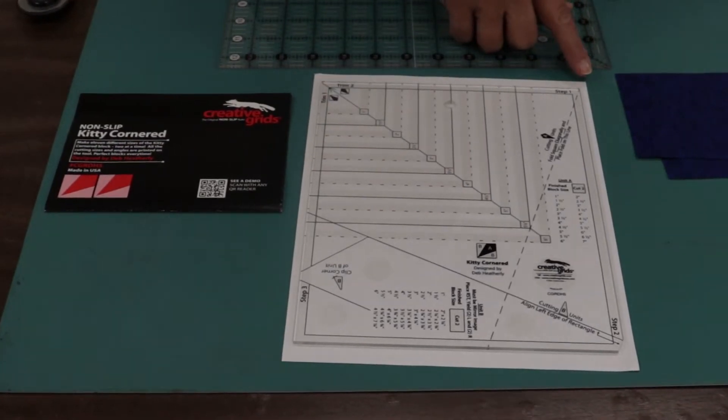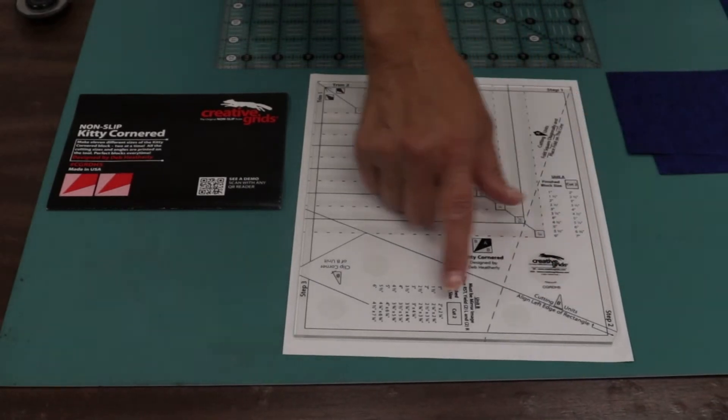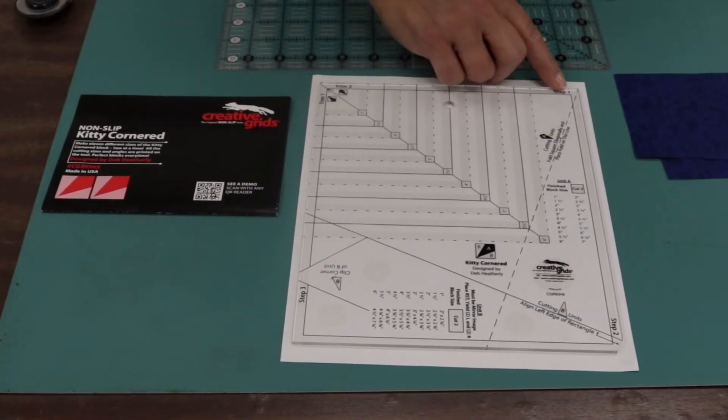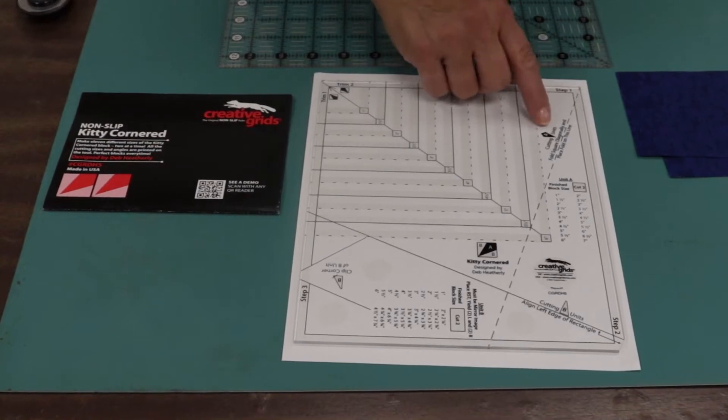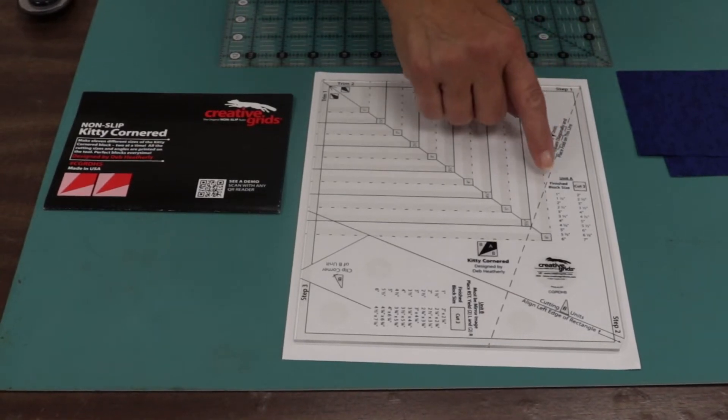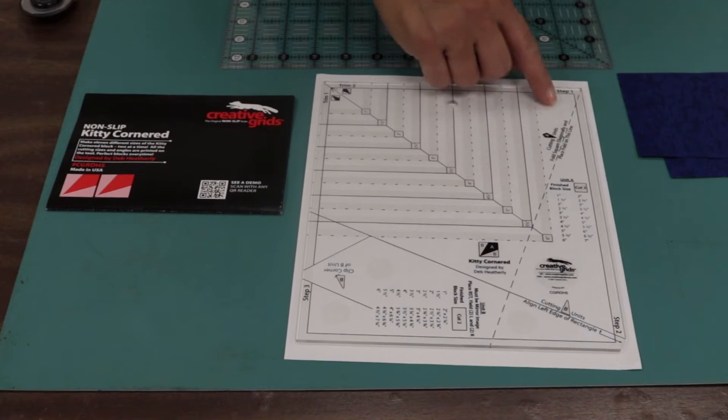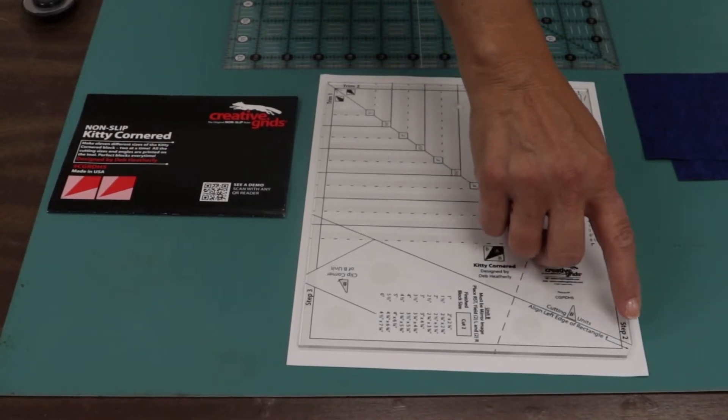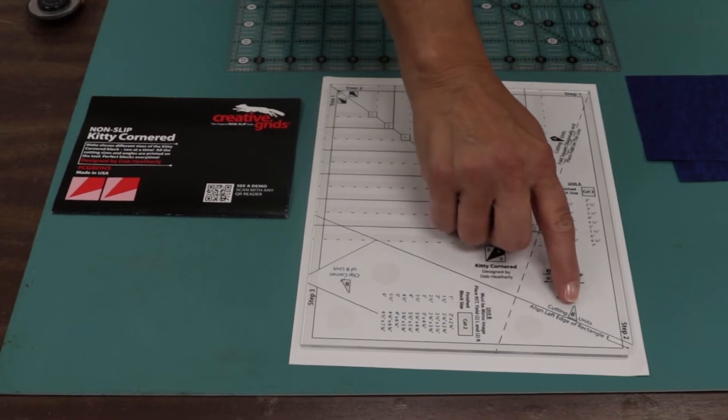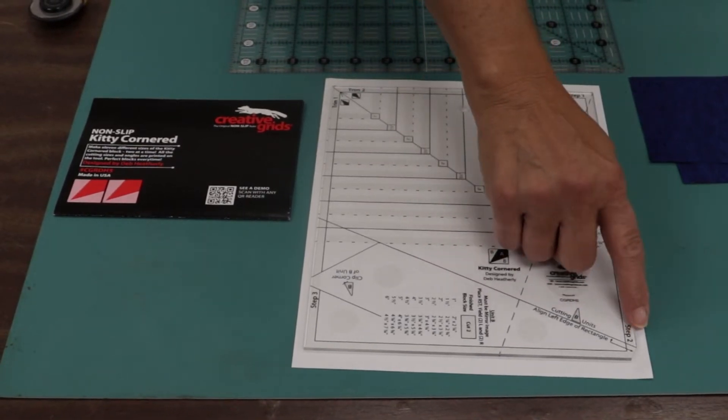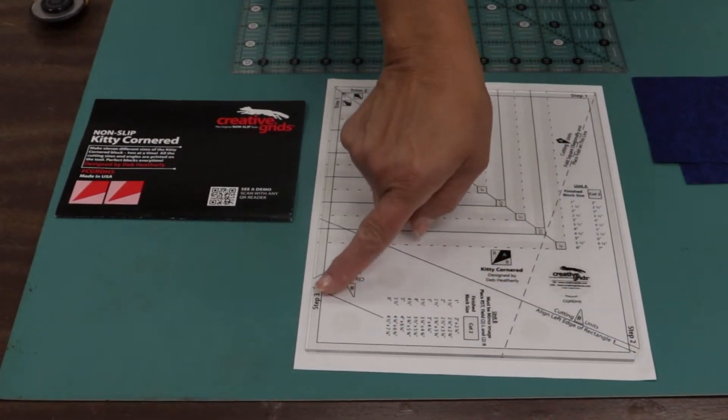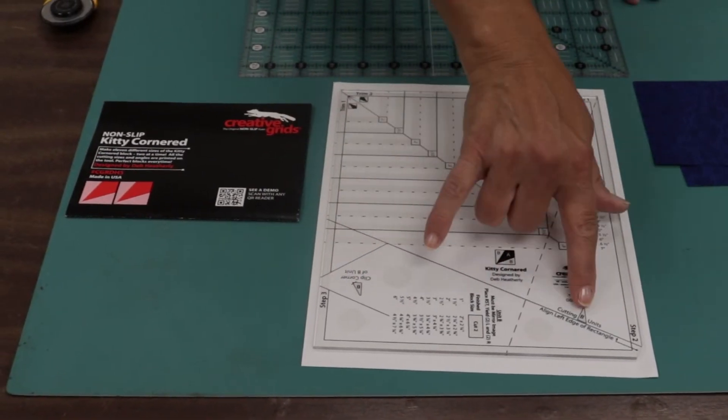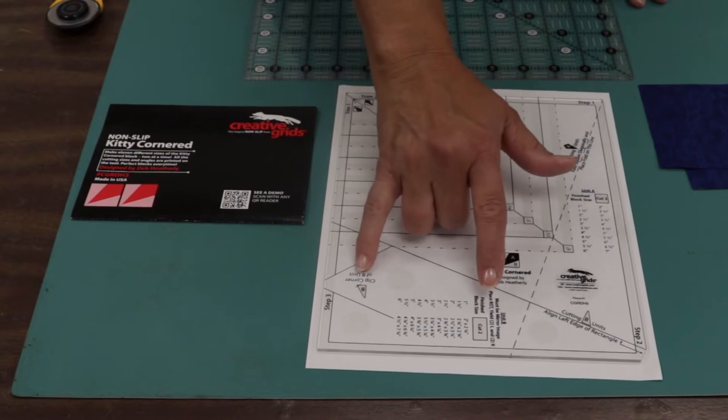So let's break down the ruler. It's set up by step 1, 2, 3, and then trim. So the A units, like I was talking about, the little kite shapes, use step 1, this corner, and then the rectangles that we're going to be using for the B shape are placed into step 2 and then get trimmed on step 3. So 2 and 3 are both for the B units that we're cutting.